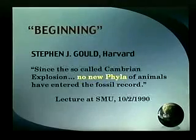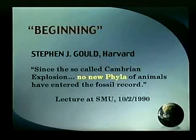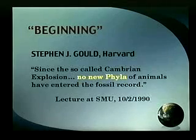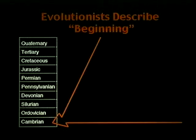If a creationist were trying to write the story themselves, they could hardly do a better job. He continues adding another significant point here in a lecture recorded at SMU University. Since the so-called Cambrian explosion, no new phyla of animals have entered the fossil record. So at the beginning, you've got more than you have today — it's dwindled down. When it starts, you've got it all, and it's been going downhill since then. That is not what the evolutionists would predict. We can summarize this way from quotes from the evolutionists.